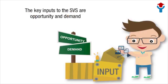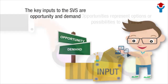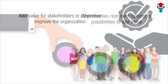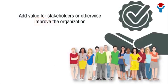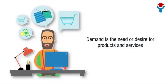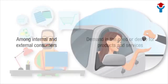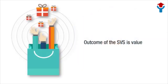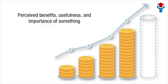The key inputs to the SVS are opportunity and demand. Opportunities represent options or possibilities to add value for stakeholders or otherwise improve the organization. Demand is the need or desire for products and services among internal and external consumers. The output of the SVS is value — that is, the perceived benefits, usefulness, and importance of something.